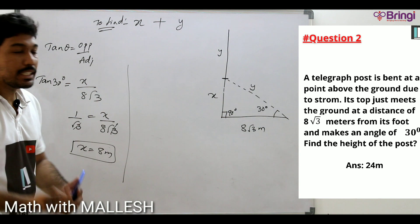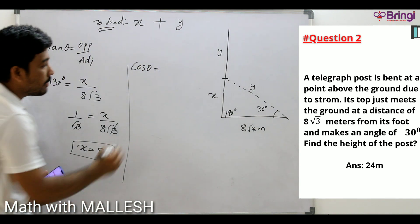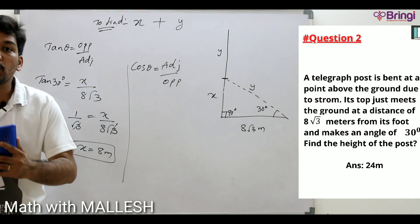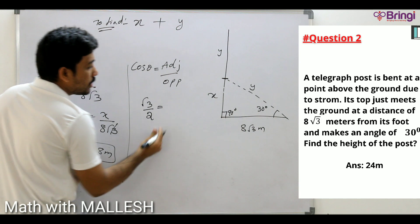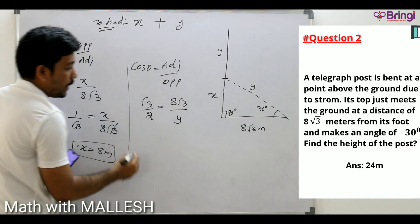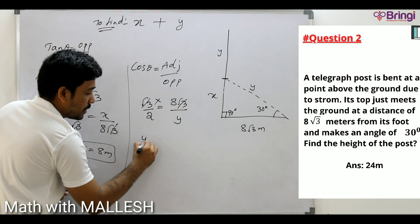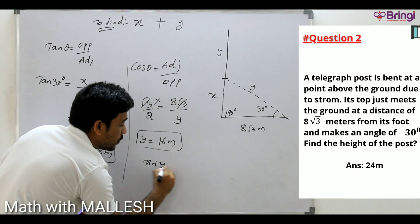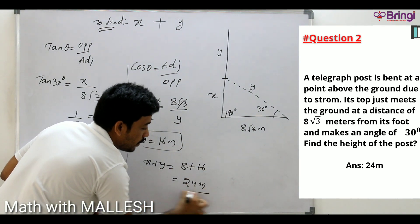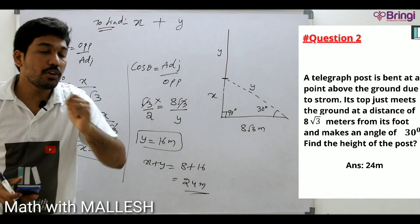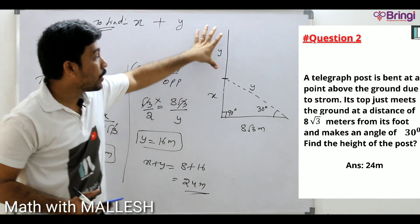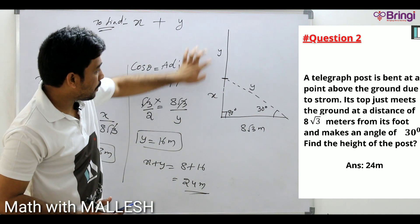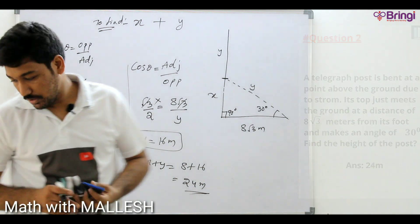Now for the hypotenuse and adjacent, we apply cos theta. cos 30° = adjacent/hypotenuse = 8√3/y. Since cos 30° = √3/2, we get √3/2 = 8√3/y. Cross-multiplying: y = 16 meters. So the height of the tower is x + y = 8 + 16 = 24 meters. The 16-meter broken part touched the ground; total height is 24 meters.